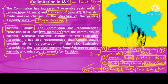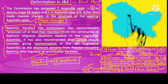On these four grounds there has been opposition against the delimitation exercise. However, the government of India has justified the exercise by stating that delimitation is absolutely essential to hold elections in the Union Territory of J&K and to restore the political and democratic process in the union territory.